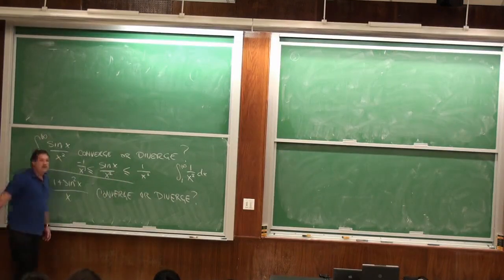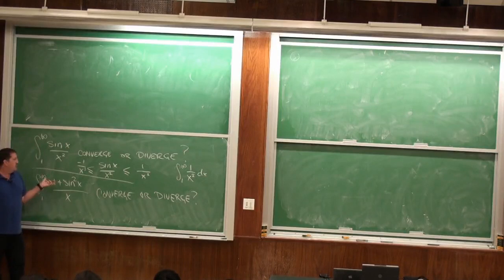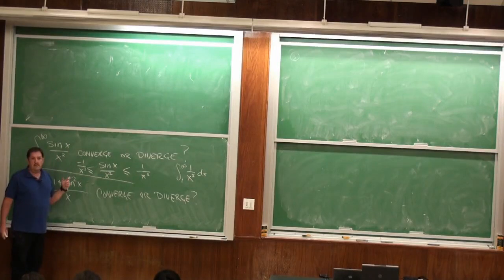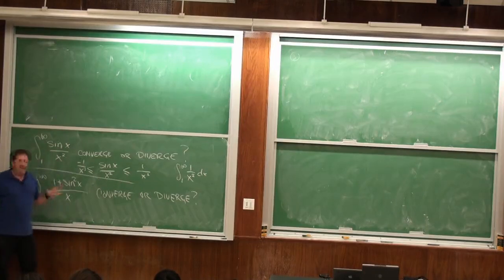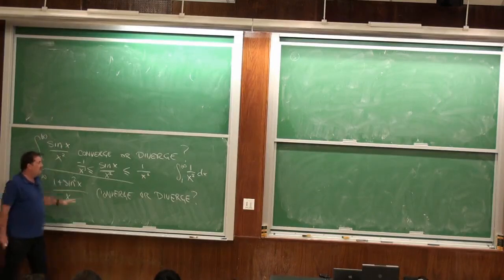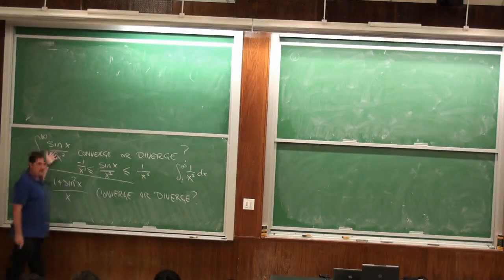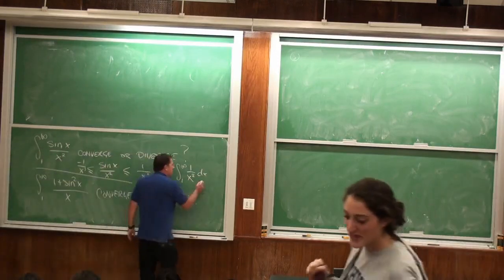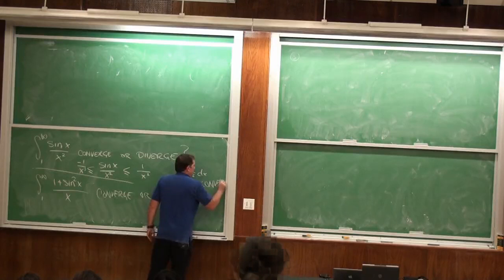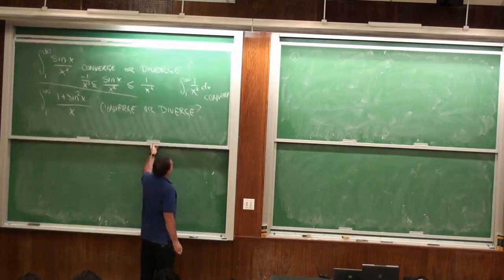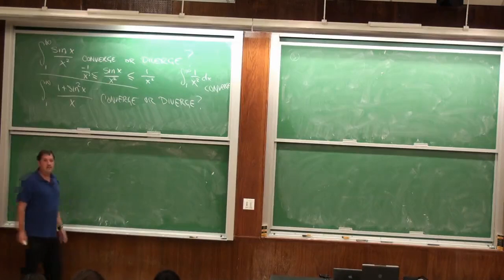The sine is always between plus 1 and minus 1, and x² is always x². So this integral, in absolute value, is always less than the integral of 1/x², which we know converges. When you integrate x^(−2), you get −x^(−1), and the limit as x goes to infinity is 0. So we're fine.